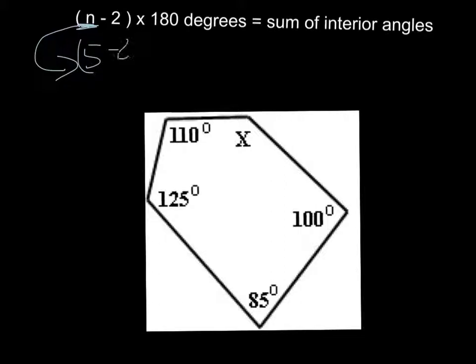5 minus 2 would be 3. So we have 3 times 180 would be, in this case, 3 times 180 would be 540. So we know that the sum that we're trying to find here, so all of them together are 540.